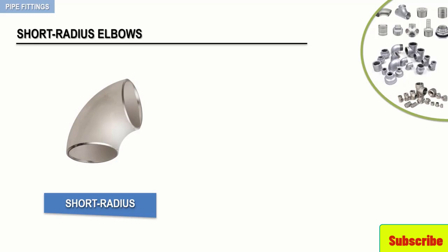The 90 degree short radius elbow makes a much sharper turn than does the long radius elbow.